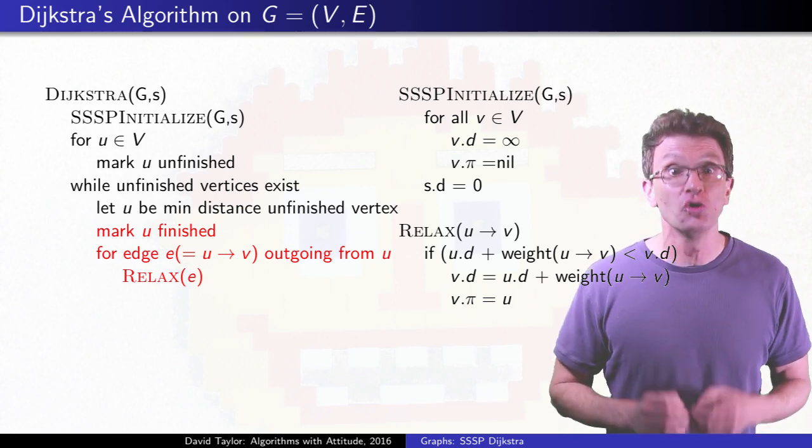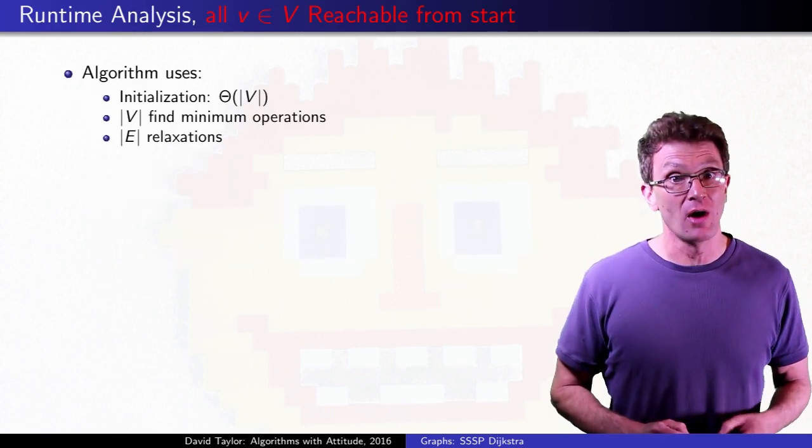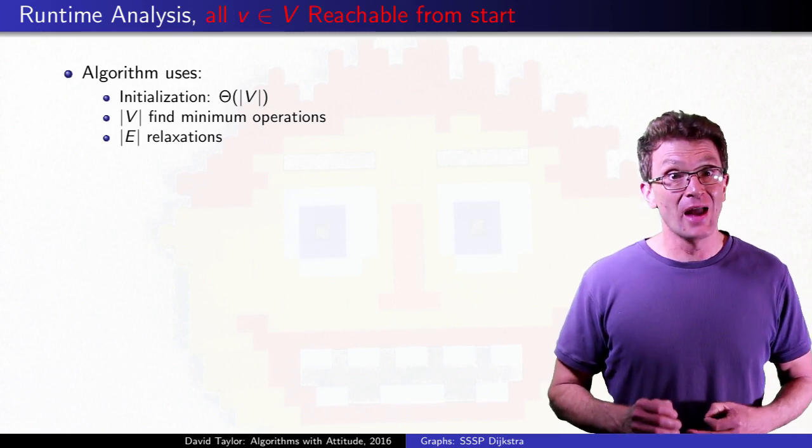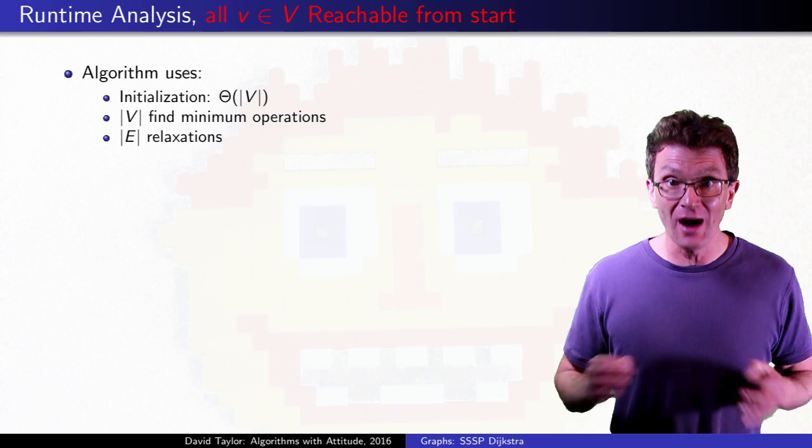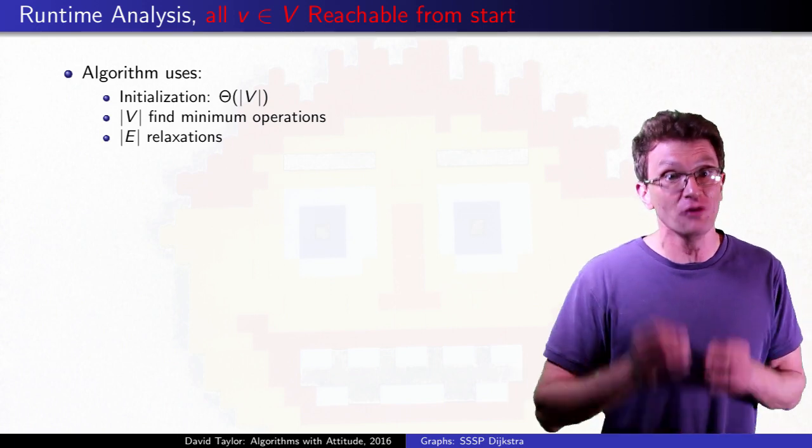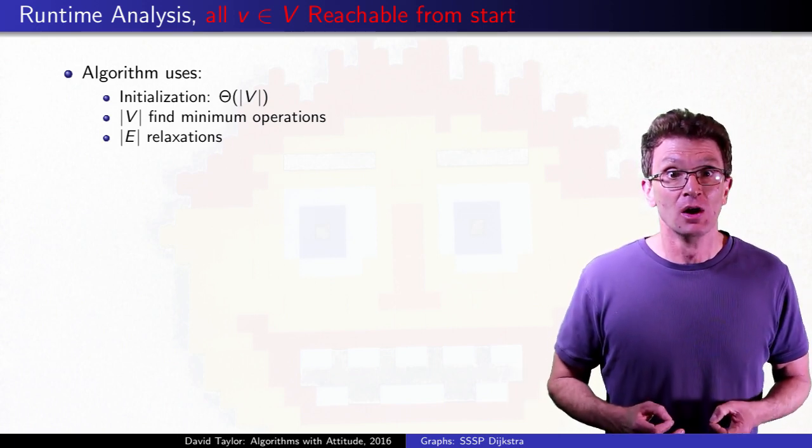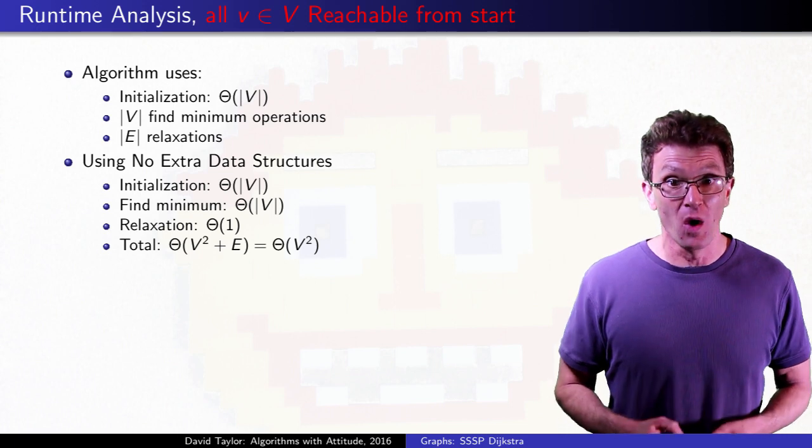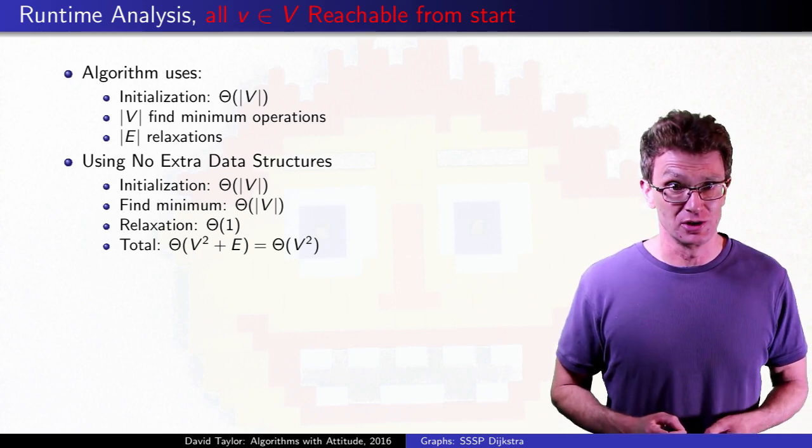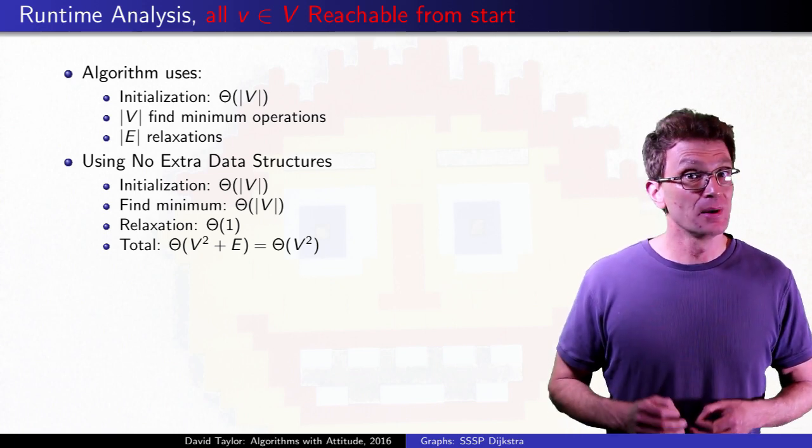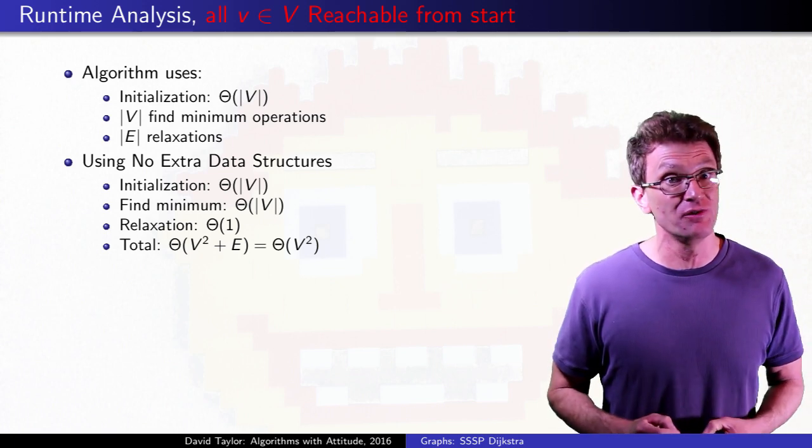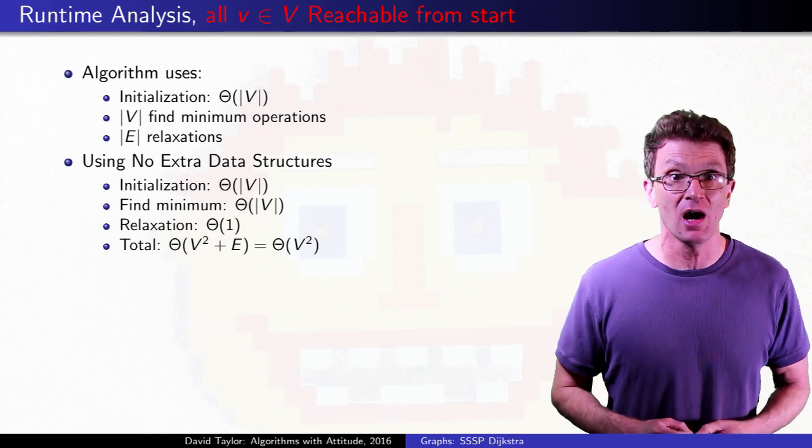If you have a dense enough graph, that's good enough. Initializing the graph takes V time. We have to find the next closest vertex V times. We can find the minimum by looping through all V vertices each time. You also relax every edge once, assuming all vertices are reachable, and it takes order V squared plus E time total.